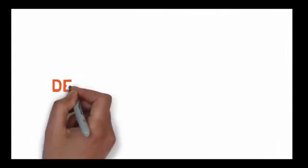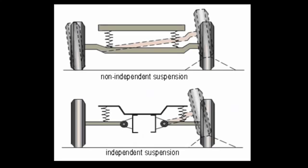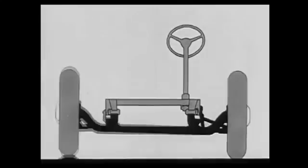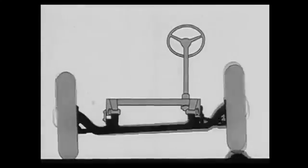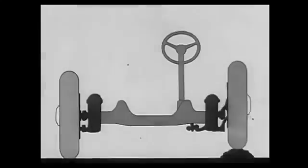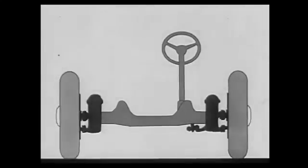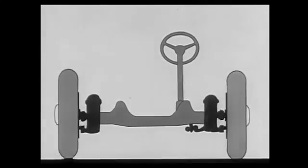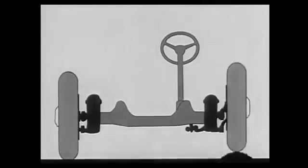A car suspension may be dependent or independent. In a dependent suspension, there is a rigid linkage between the two tires, and the force acting on one wheel will affect the other. An independent suspension system allows both wheels to move vertically up and down independently.